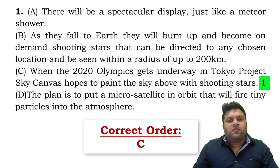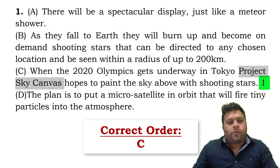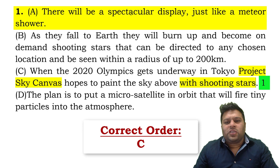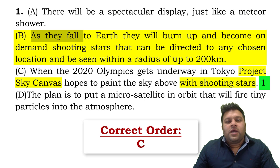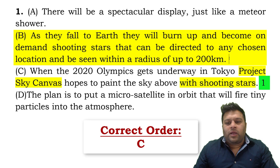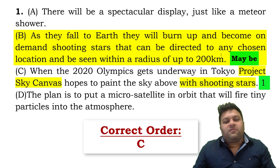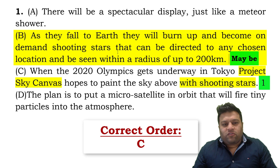Project Sky Canvas hopes to paint the sky above with shooting stars — they've introduced the project and what it hopes to do. I have to link it with the next sentence. 'There will be a spectacular display just like a meteor shower' — that's not linked with shooting stars. 'As they fall to earth they will burn up and become on-demand shooting stars' — maybe. But I'm not saying yes yet; that is the biggest mistake students make.